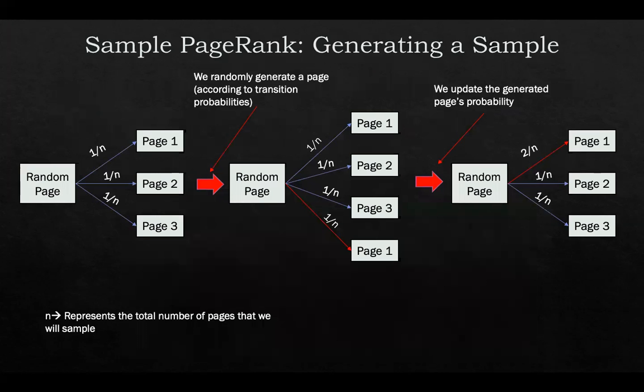We can clearly see it here. It's because, let's say we have a random page generator, and we have already generated page one, two, and three. Each of these pages would have one over n as a probability, where n is the number of samples we will create. And when creating another random page, let's say we created page one, we would have page one, page two, page three, and now page one again. Updating the value would mean that each of these probabilities is no longer 1 over n because page one is twice there. So page one's probability would be 2 over n.